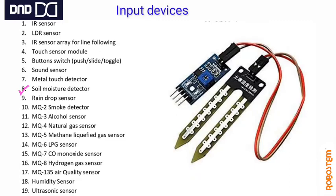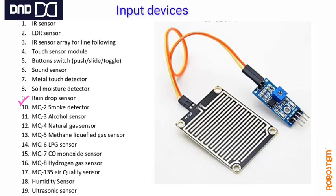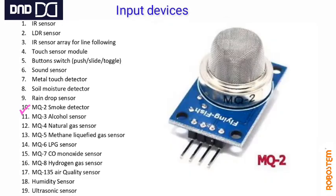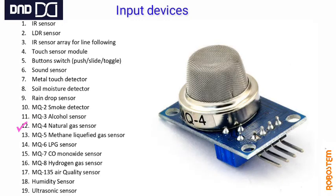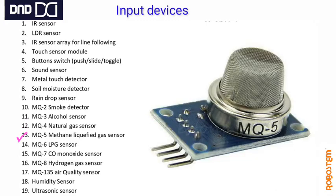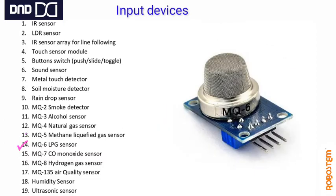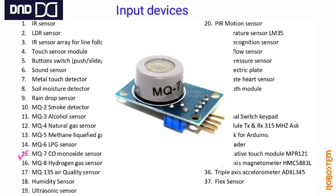Soil moisture sensor senses moisture in the soil. Rain drop sensor detects water droplets and sends a rain drop signal. The MQ series sensors detect different types of gases: natural gas, smoke, alcohol, methane, LPG, carbon monoxide, hydrogen, and air quality. These are all different gas sensors in the MQ series.